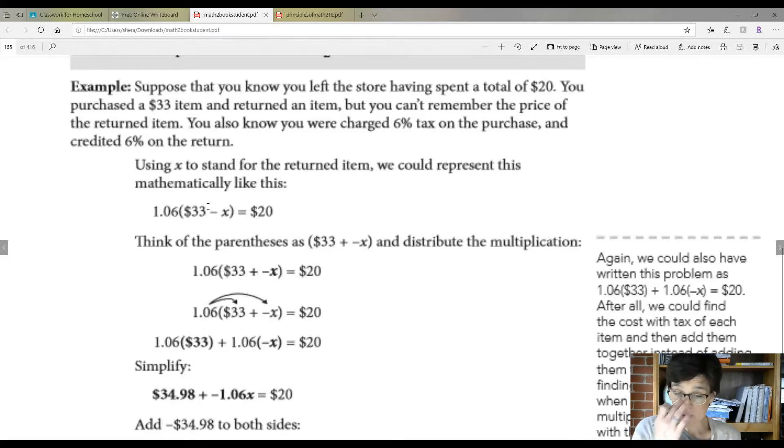So think of the parentheses like this. Because we can't use distributive with subtraction, so you have to change it to where it is adding a negative. And then you can distribute 1.06 times 33 plus 1.06 times negative X. You're left with this. Then simplify it.